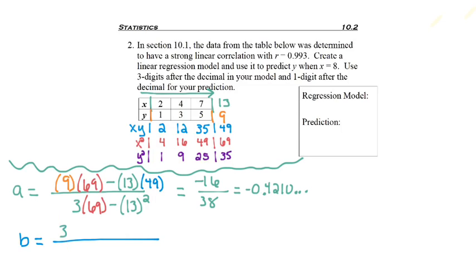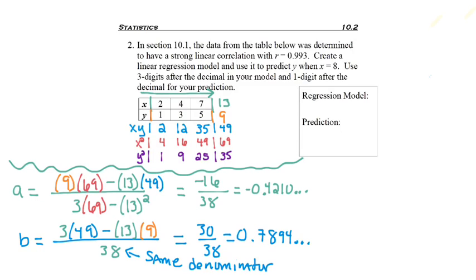Now I'm going to find B. This starts off with N, which the other formula did not, because they're different numerators. The sum of XY, so I take the 49 and multiply it. Minus. And now I want the sum of X's, which is the 13. It's starting to look like the formula above. But then it says the sum of Y, which is 9. Notice these are not squared. The denominator is going to be 38. How do I know? It's the same denominator. The two formulas have identical denominators. So really I'm looking at 30 divided by 38 to get 0.7894, etc.